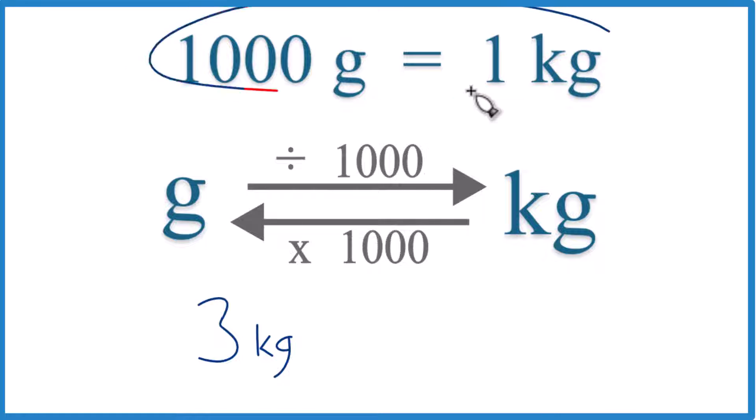We call this a conversion factor, and we use it when we go from grams to kilograms or kilograms to grams. In this case, we have 3 kilograms, so we're going to go from kilograms to grams, we're going to multiply by 1,000, like this.